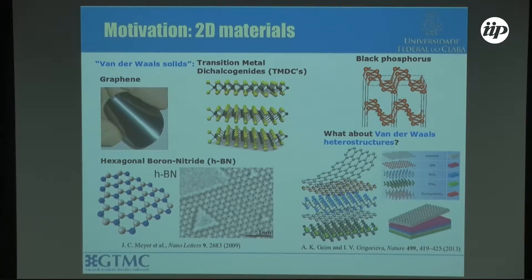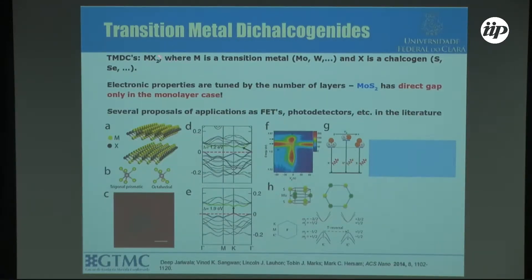Nowadays, people have been thinking about Van der Waals heterostructures. I'm going to talk a little at the end about these structures where you mix some of these materials. In my case, I'm going to talk only about mixing TMDCs — transition metal dichalcogenides. These are materials composed of a transition metal and two chalcogens. The transition metal would be molybdenum or tungsten, and most of the works I've been looking at use those for optoelectronics and exciton properties.